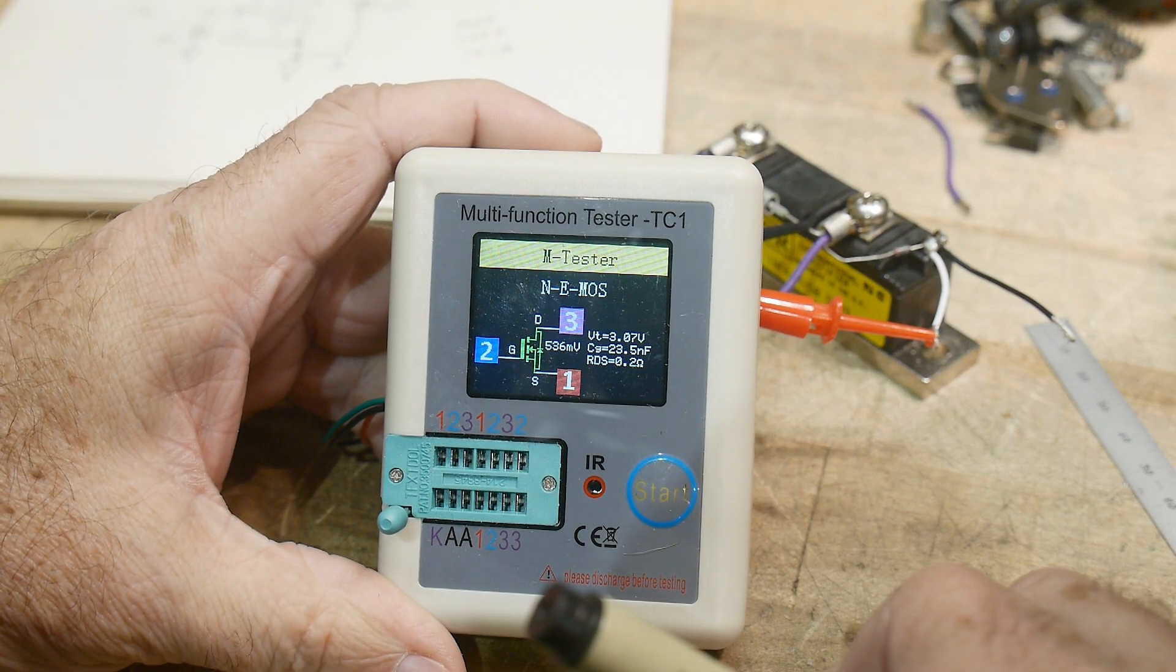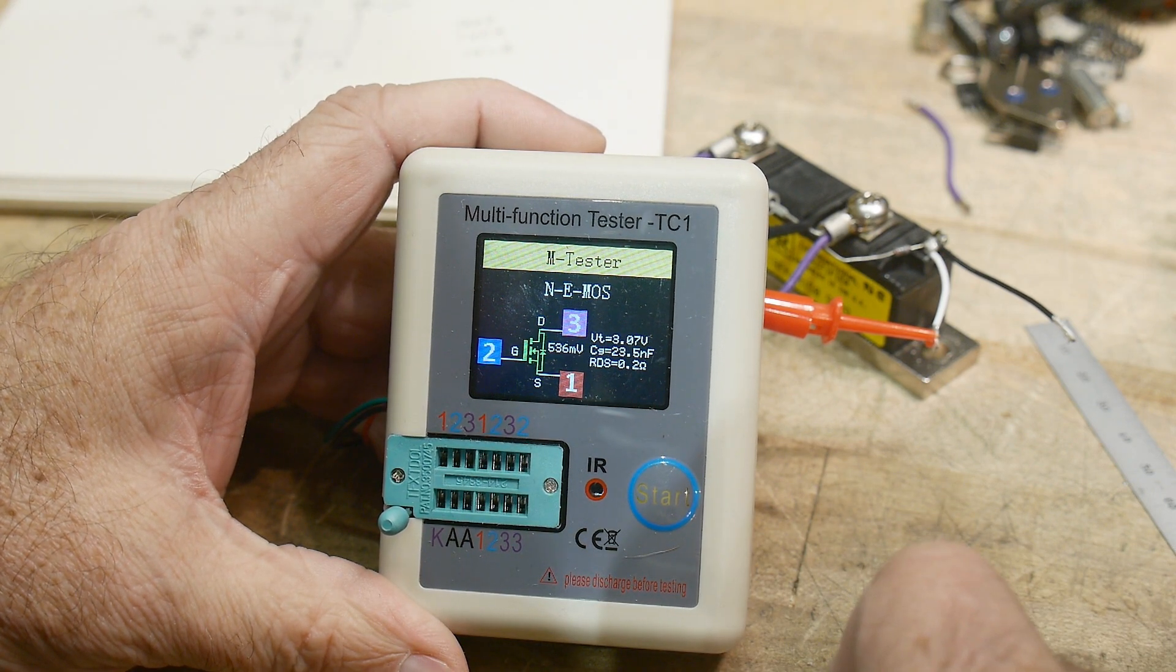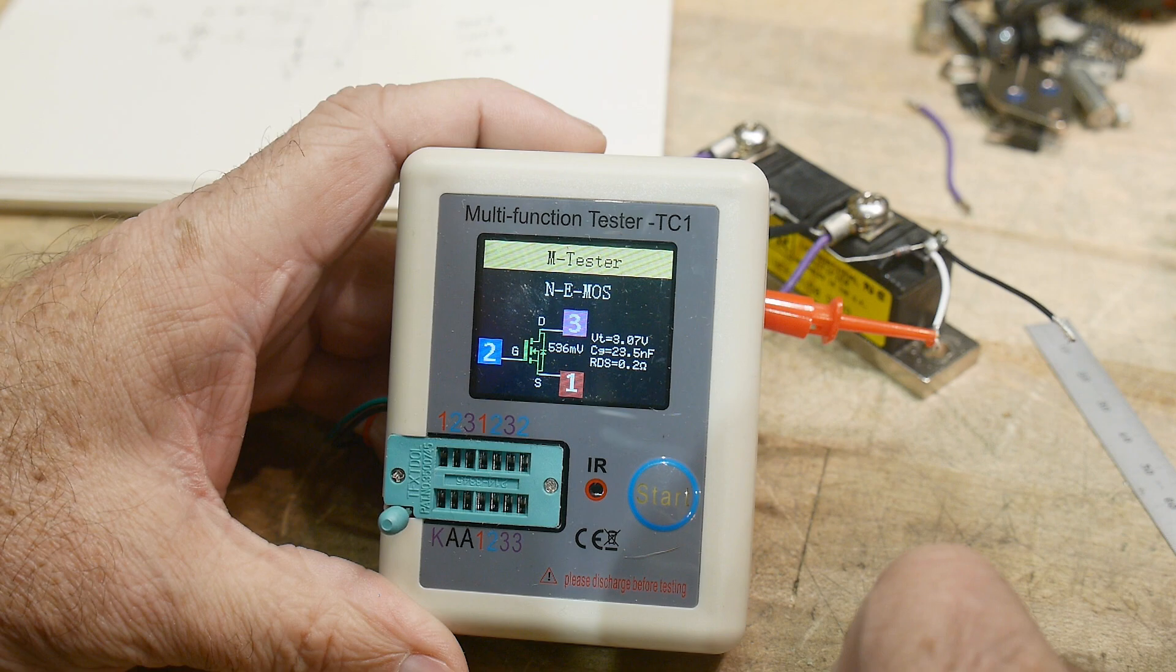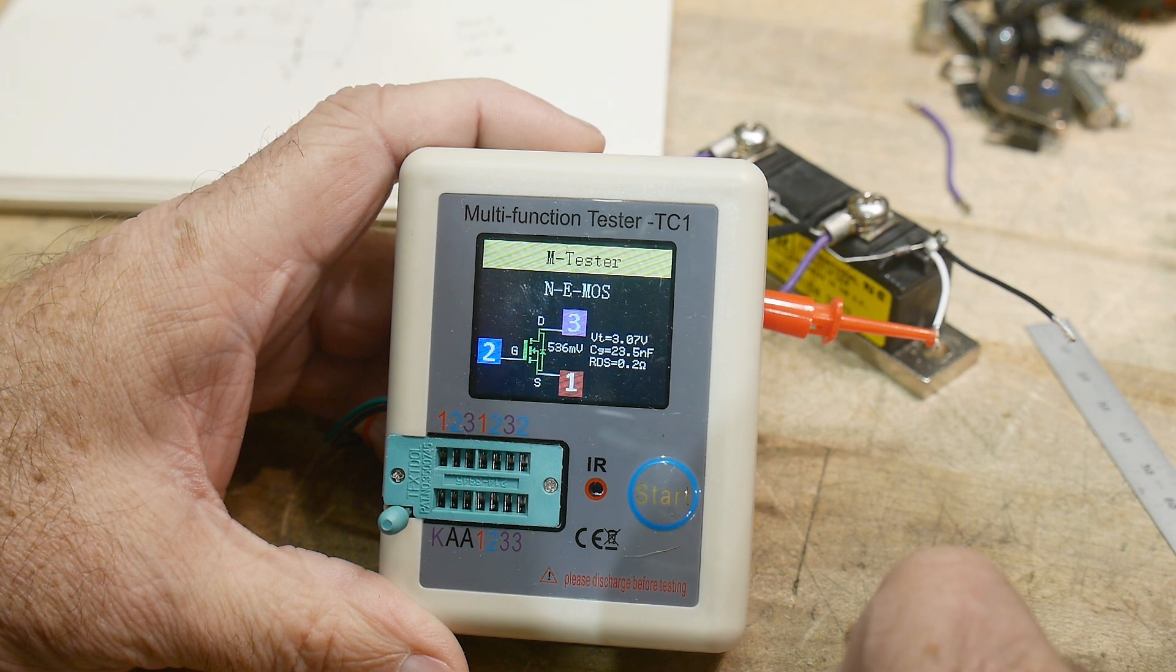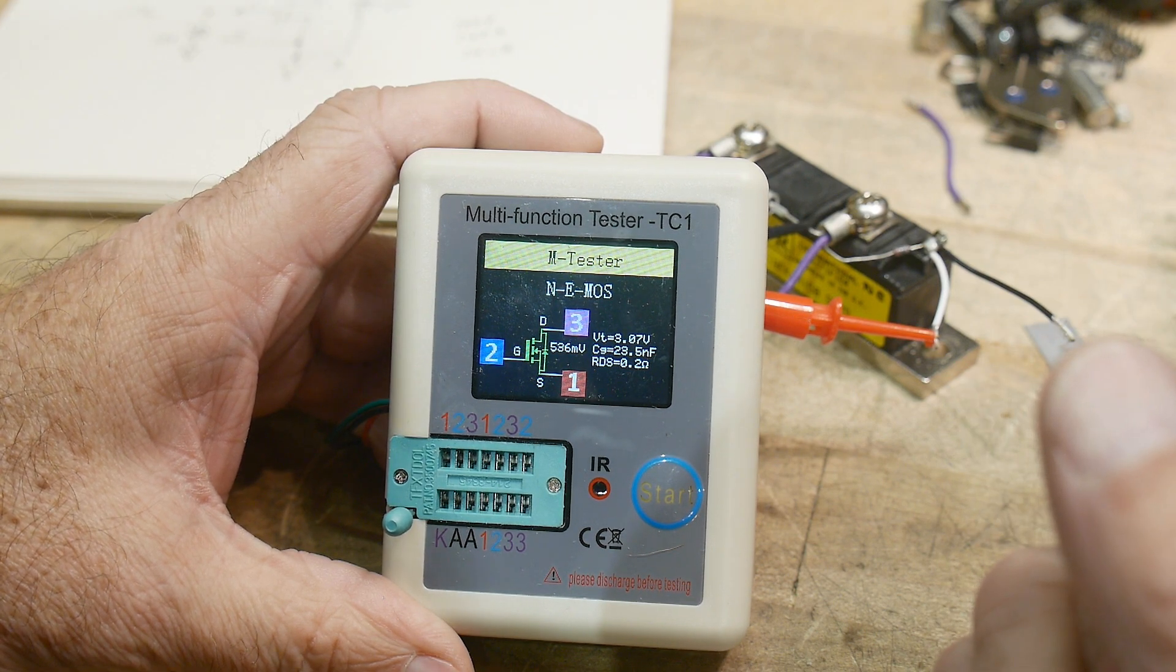There we go. It's an NMOS. Three volts turn on voltage. On resistance 0.2 ohms. I just can't measure that. But yeah, it is working.